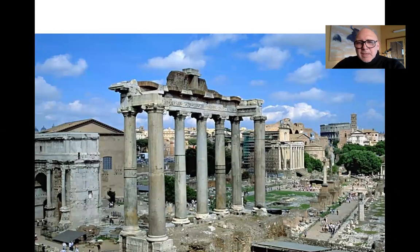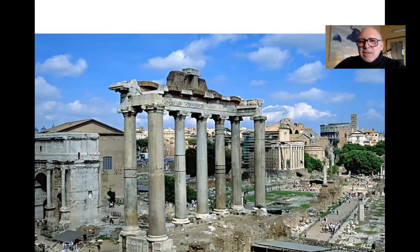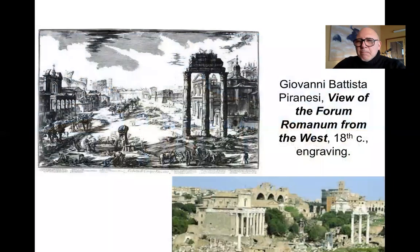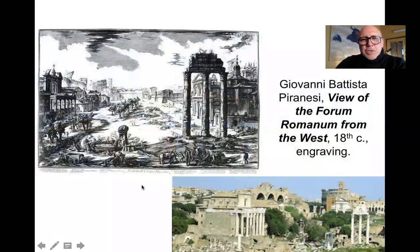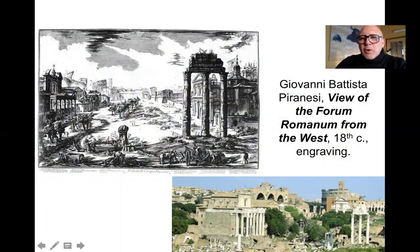There's an even more important monument in the Roman Forum itself. I want to show you the temple here — in the center right of this image — which was built by the sons in honor of their parents, Antoninus Pius and Faustina the Elder. And here's a very interesting print by Giovanni Battista Piranesi, the great Baroque printmaker and imagist of Rome. What we see is the Roman Forum as it looked in the 18th century, and here is the temple — the Temple of Antoninus Pius and Faustina, or the Temple of the Antonines.